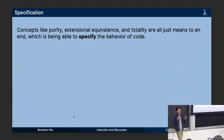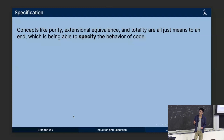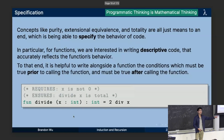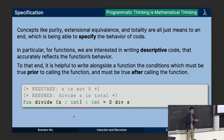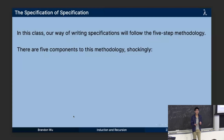I also want to talk about specification. We want to be able to specify the behavior of code, and there's a particular format we use in this class. We want to write descriptive code documenting the preconditions and postconditions of a function — what do we need to know about the function's input, and what can we say about the output? We're going to follow something called the five-step methodology. There are five things important about a specification that you should always write when you write a function in this class, and oftentimes it will be provided to you in starter code.